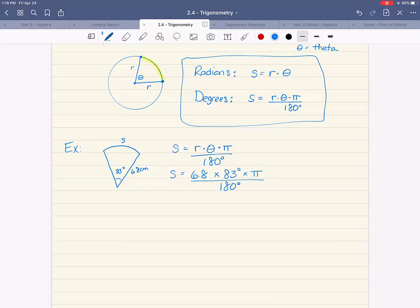It's going to be the radius which is 6.8 times the angle 83 degrees times pi all over 180 degrees. You will go ahead and put this in the calculator as you see it. If your calculator does not have a pi key, you can just type in 3.14. When you type it in the calculator, it is 6.8 times 83 times 3.14 and then divided by 180.